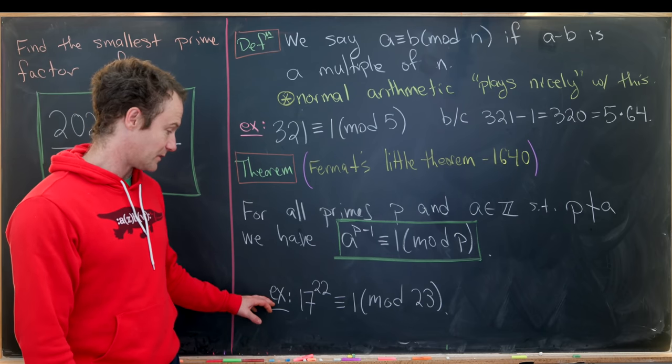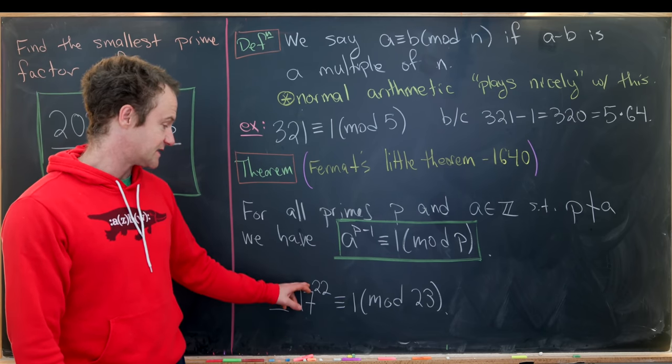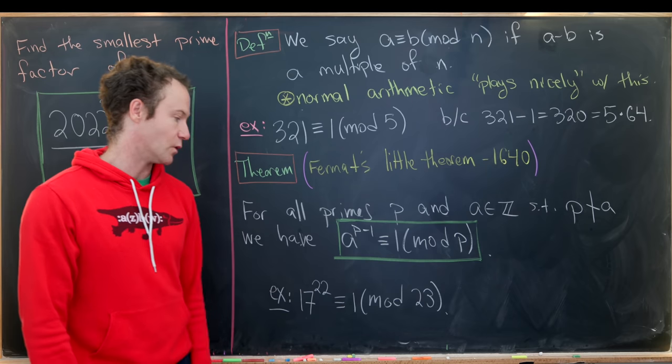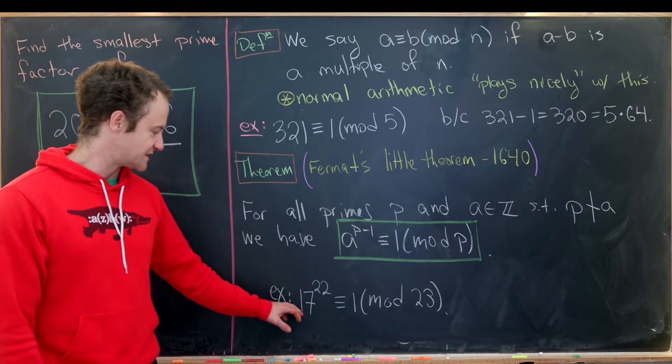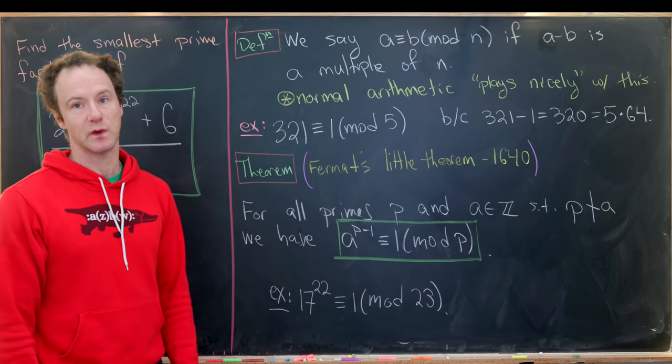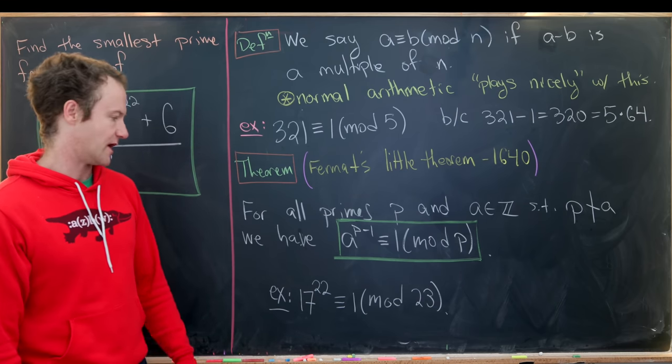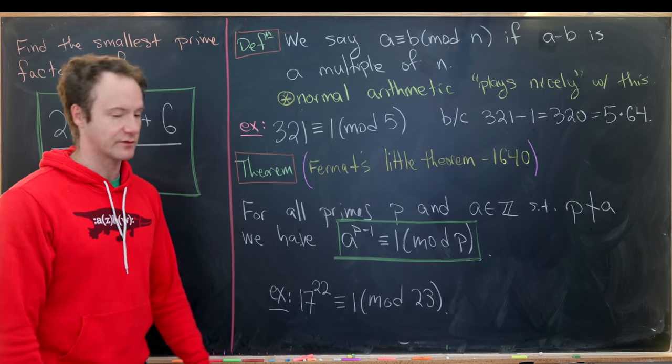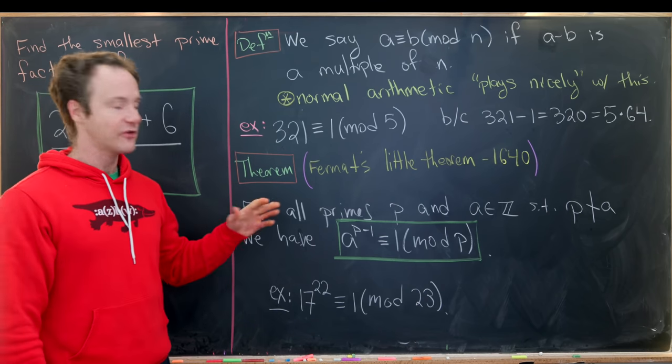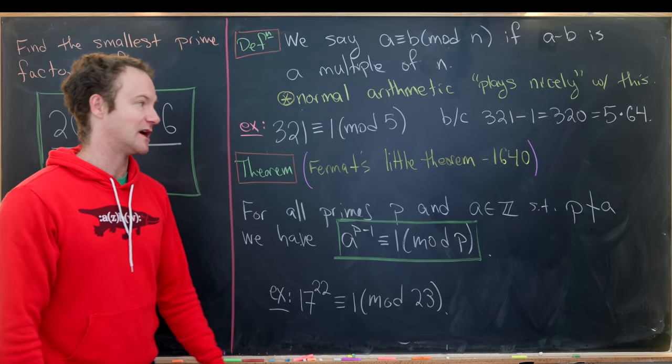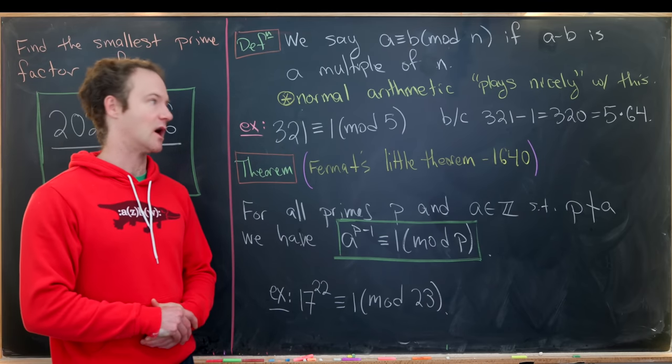And so for example, 17 to the 22 is congruent to 1 mod 23. That's because 17 is not a multiple of 23, 23 is prime, and then 22 is 23 minus 1. Another thing that I'd like to point out is how Fermat's little theorem applies to the modern world.